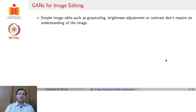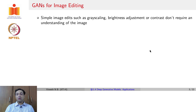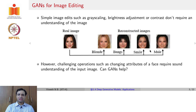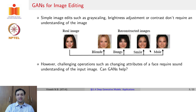The first application that we will talk about is image editing. Simple image edits such as making an image grayscale, or adjusting the brightness or contrast, do not require an understanding of the semantics inside the image. However, if we want to take a face image and make the hair black, or add bangs, or add a smile, or make the image male, then you need to understand the semantic content in the image.